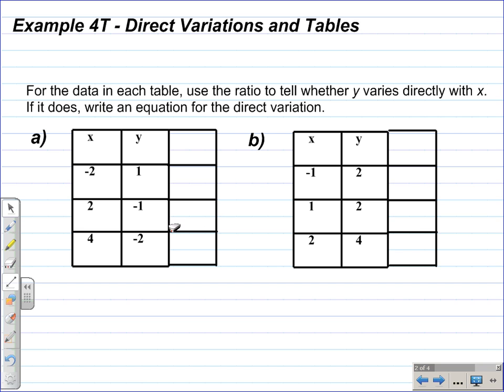Example 4t, Direct Variations and Tables. For the data in the table, use the ratio to tell whether y varies directly with x. If it does, write an equation for the direct variation.